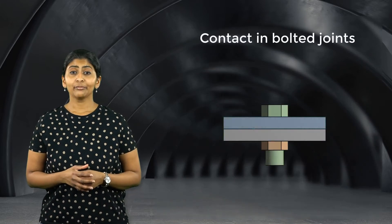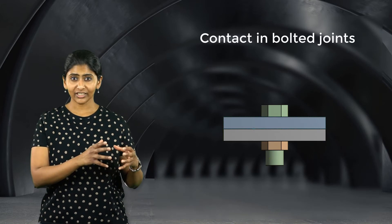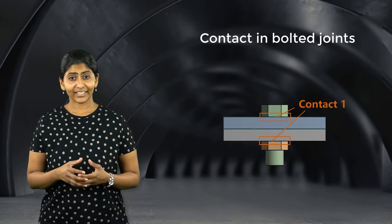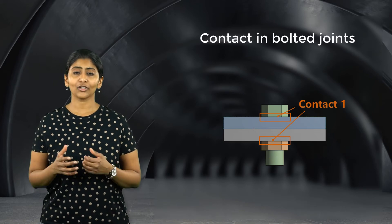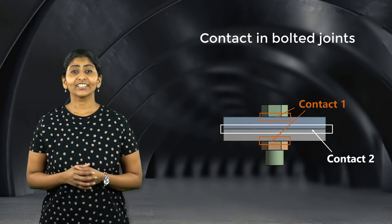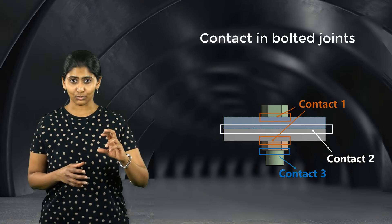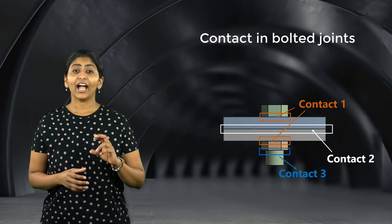How do we decide what type of contact to use? In bolted joints, contact connections occur primarily in three regions. The first region is between the bolt head or the nut and the mating component. Second is between the two mating components. And the third region is between the threaded region of the bolt and the nut.